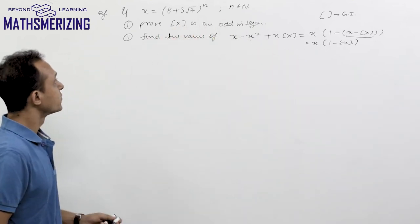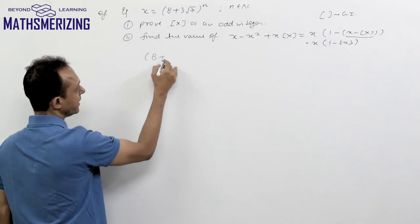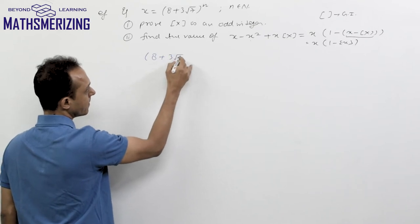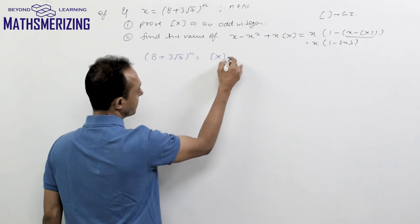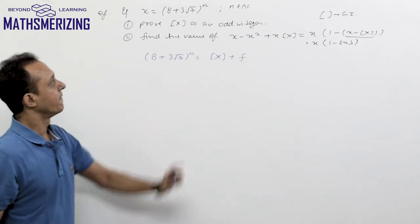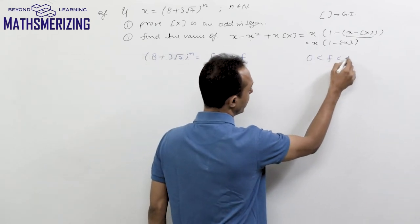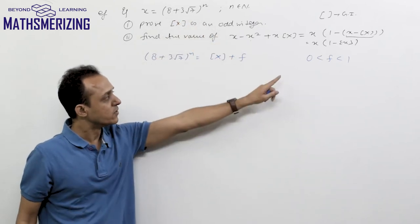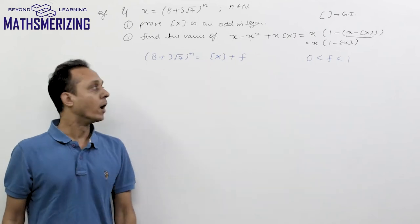We write x, that is (8 + 3√7)^n, as the greatest integer function of x plus fractional part of x, and we call the fractional part f. The value of f lies between 0 and 1 because this expression is not an integer, so it will always have some fractional part between 0 and 1.